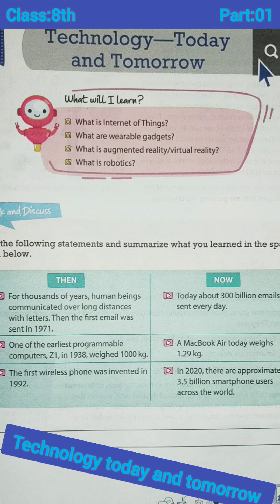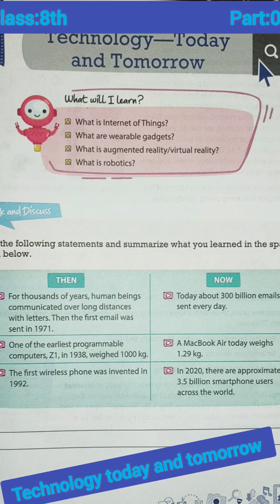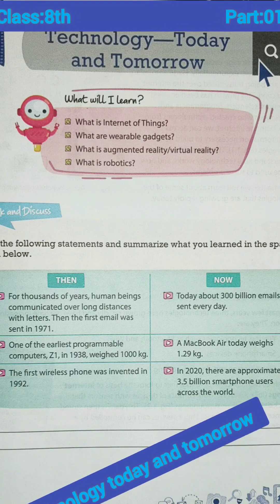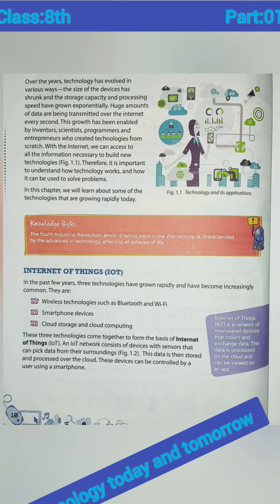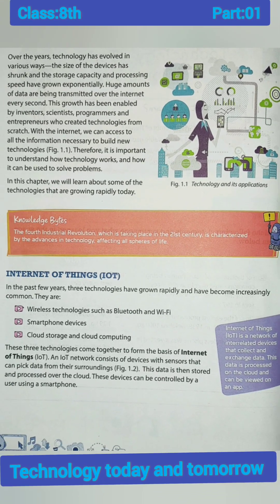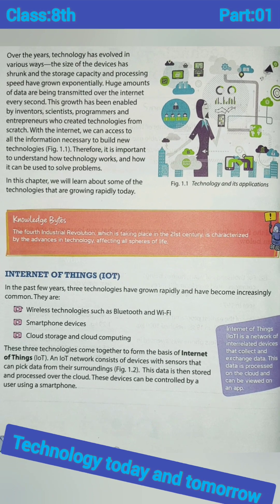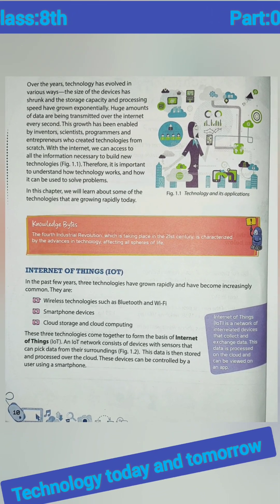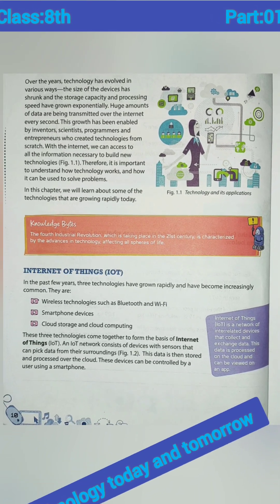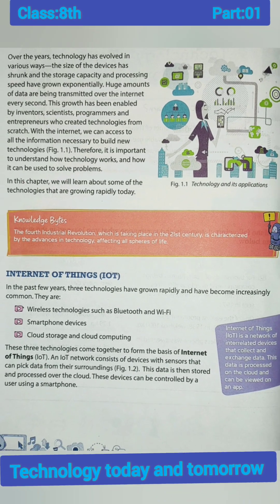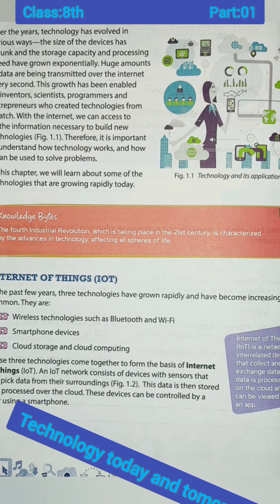This is related to your Class 8 first lesson: Technology Today and Tomorrow. I will read out the first paragraph. All of you listen carefully: Over the years, technology has evolved in various ways. The size of devices has shrunk and the storage capacity and processing speed have grown exponentially. Huge amounts of data are being transmitted over the internet every second. This growth has been enabled by inventors, scientists, programmers and entrepreneurs who created technologies from scratch. With the internet, we can access all the information necessary to build new technologies. Therefore it is important to understand how technology works and how it can be used to solve problems.